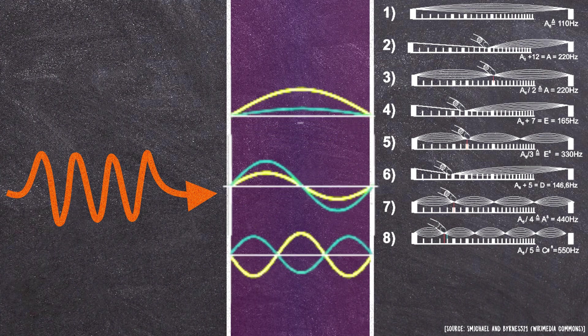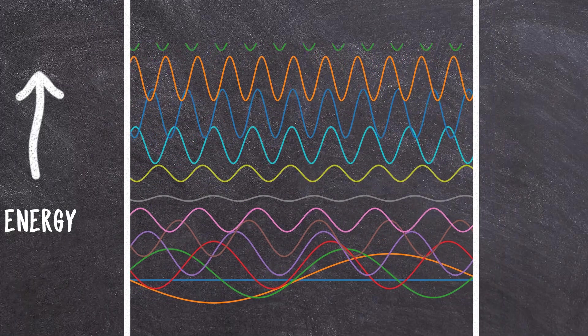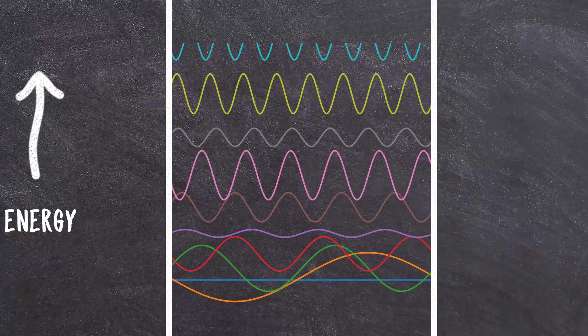This is literally how we make different notes in basically any musical instrument. And crucially, as we make our confinement smaller and smaller, the gaps between successive harmonics, or notes, grows and grows.